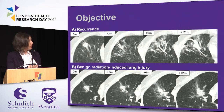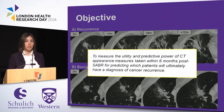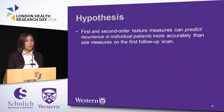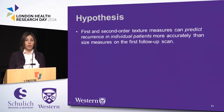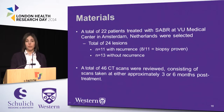Based on our observation that the appearance of these changes looks different, the objective of our study is to measure the utility and predictive power of appearance measures taken within six months of treatment for predicting which patients will ultimately have a diagnosis of recurrence. We hypothesized that first- and second-order texture measures can predict recurrence in individual patients more accurately than traditional size measures on the first follow-up scan. We looked at 22 patients treated with SABR with a total of 24 lesions — 11 with recurrence and 13 without — and analyzed 46 scans taken at approximately three or six months post-treatment.